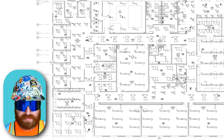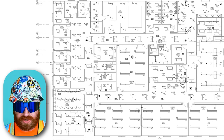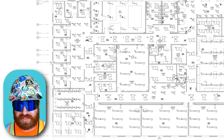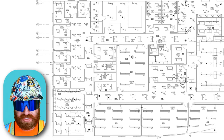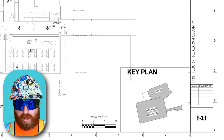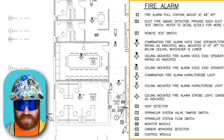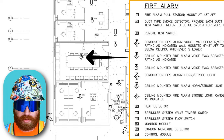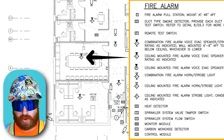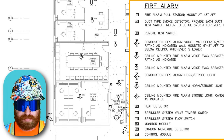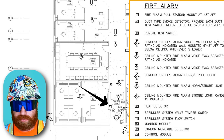Zooming back out, there are all kinds of lighting fixtures throughout — we just use our symbols, lighting fixture schedule, and panel schedules to figure out how they're all connected and what they are. Moving to E3.1, first floor fire alarm and security — using our symbol legend, we can see a ceiling-mounted fire alarm voice speaker with strobe that will trigger in the event of a fire. Right outside this space, we see a fire alarm pull station.